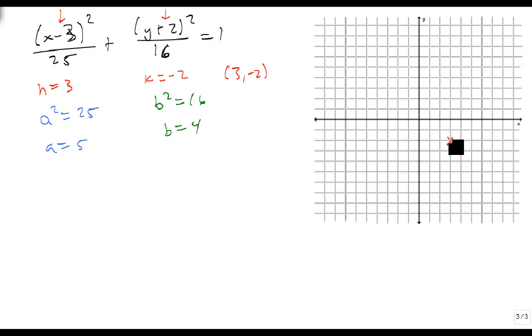So we're going to go 1, 2, 3, 4, 5 across and 5 the other way. We're going to go up 1, 2, 3, 4, because it's a 16. And down 1, 2, 3, 4.